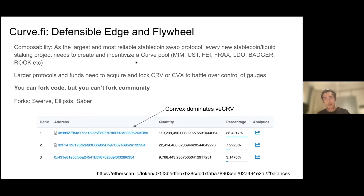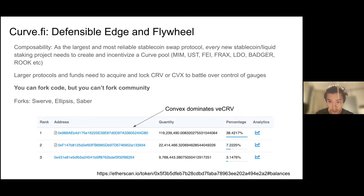To make Curve a long-term holding, we have to see why we think it's a defensible position and why their flywheel can keep going. Essentially, Curve is the de facto stablecoin swap protocol, so every new algo stablecoin has to create and incentivize a pool here. For example, MIM became really big through the MIM three-pool, there's a UST one for Luna users, and FEI has a factory pool.